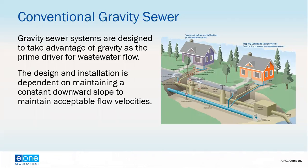Gravity sewers are designed to take advantage of gravity as the prime driver. When wastewater enters the pipe, it flows downhill. The design and installation is dependent on maintaining a constant downward slope so that wastewater flows downhill and maintains acceptable flow velocities.